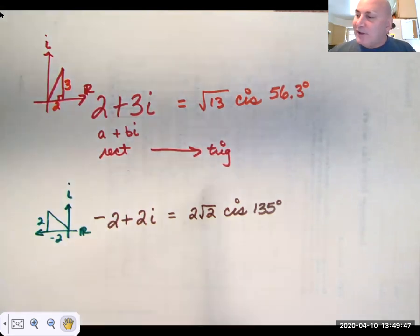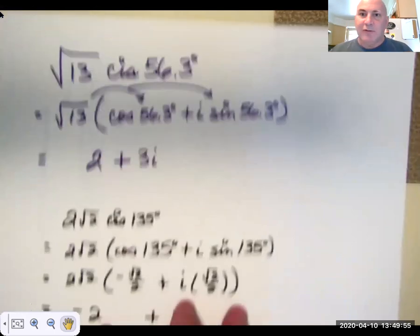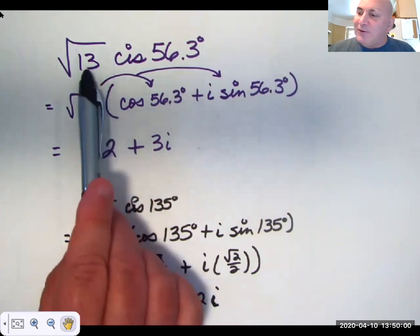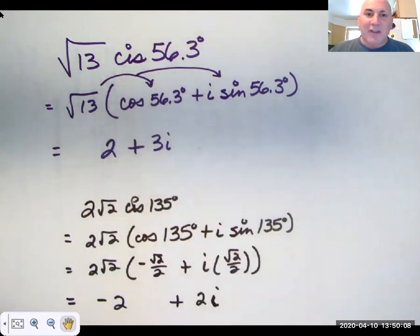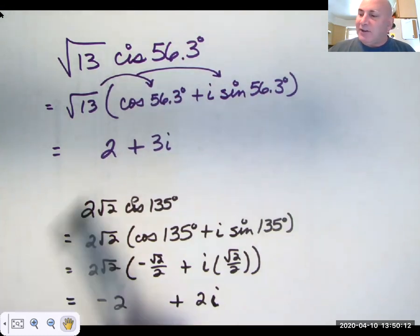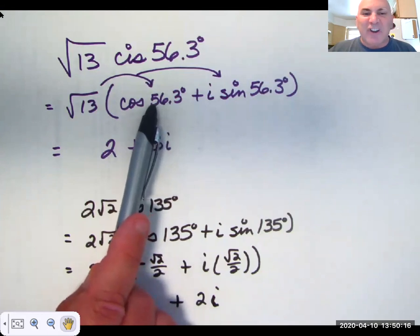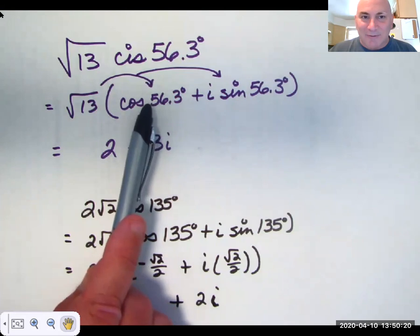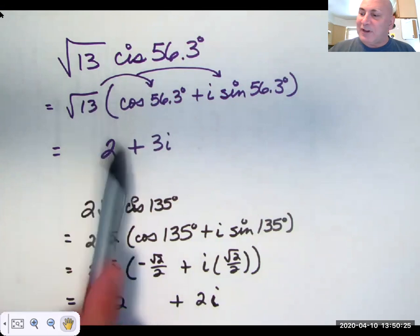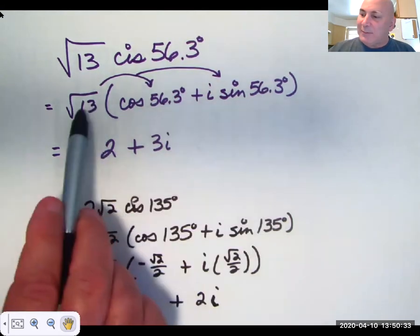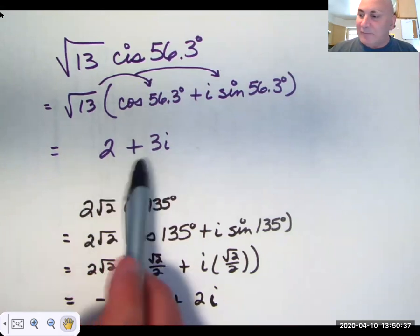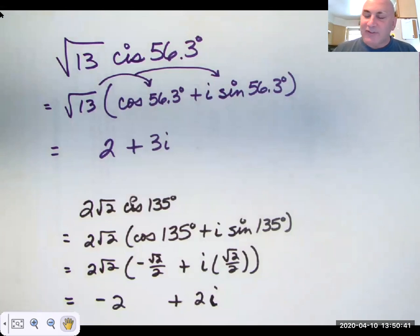Let's check our work. Let's make sure that we got the correct answers for both of these. To check our work, we rewrite root 13 cis 56.3 degrees by expanding what CIS stands for. And then using the distributive property. You take the cosine of 56.3 degrees. I'm probably not going to use a table. Most of you probably don't know how to use a table, because we haven't taught you. So use your calculator. Multiply it by the square root of 13. And you should get two with some rounding error. Same with the sine of 56.3 degrees times root 13. You should get three with a rounding error. And times I. Same for 2 root 2 cis 135 degrees.